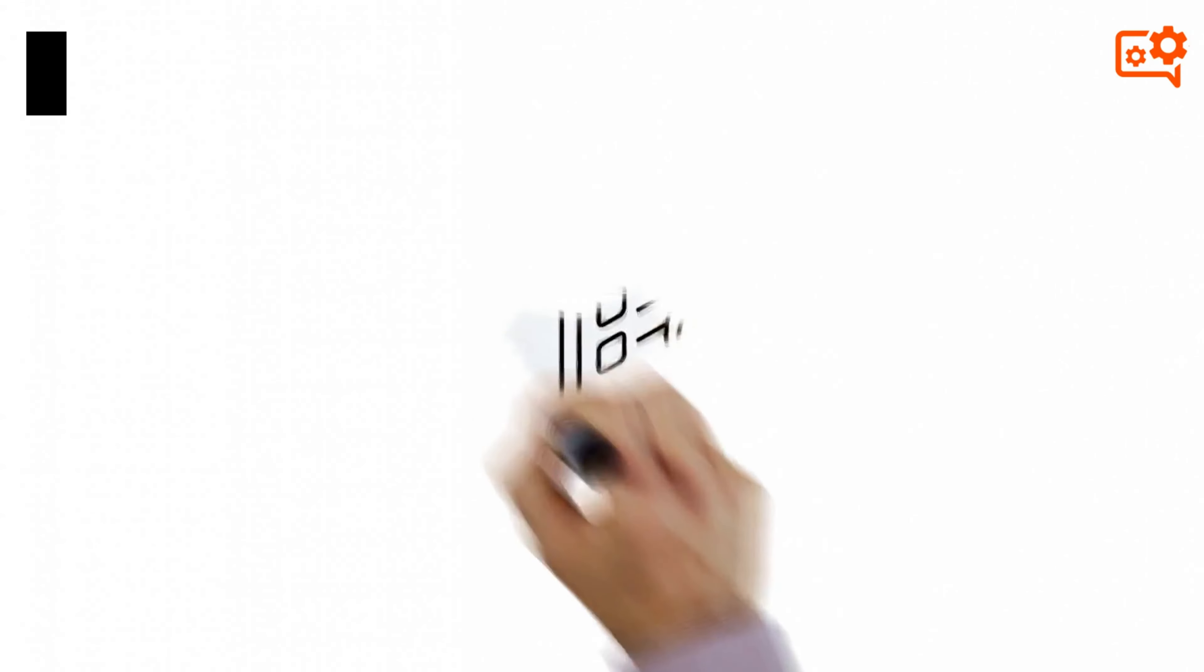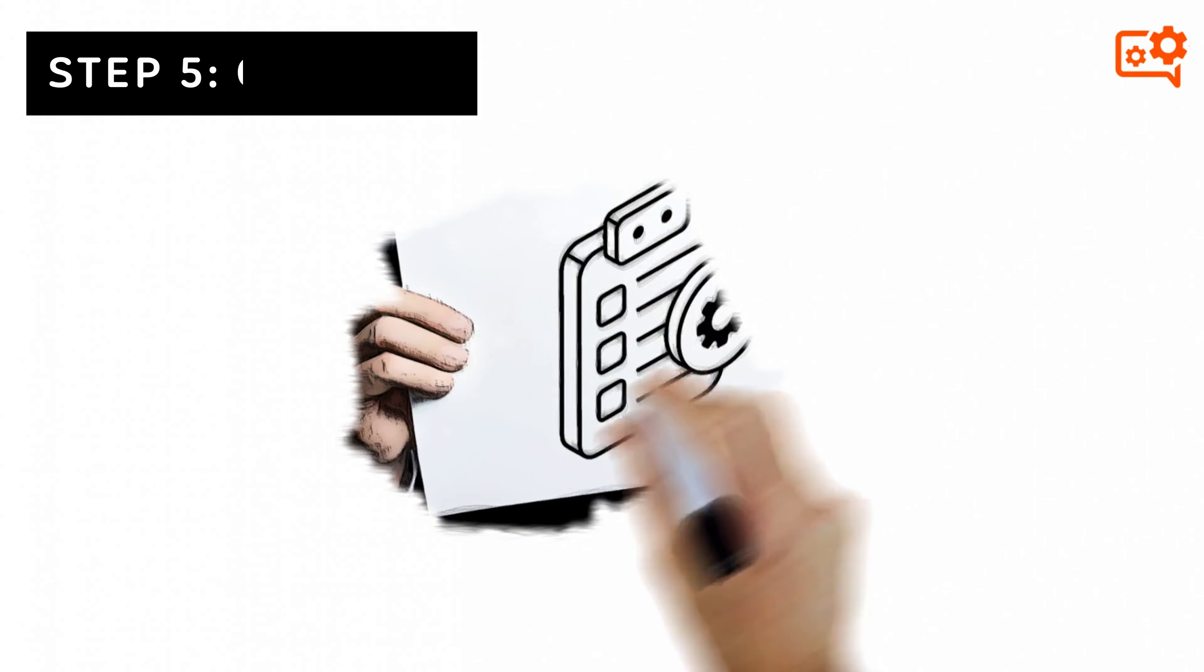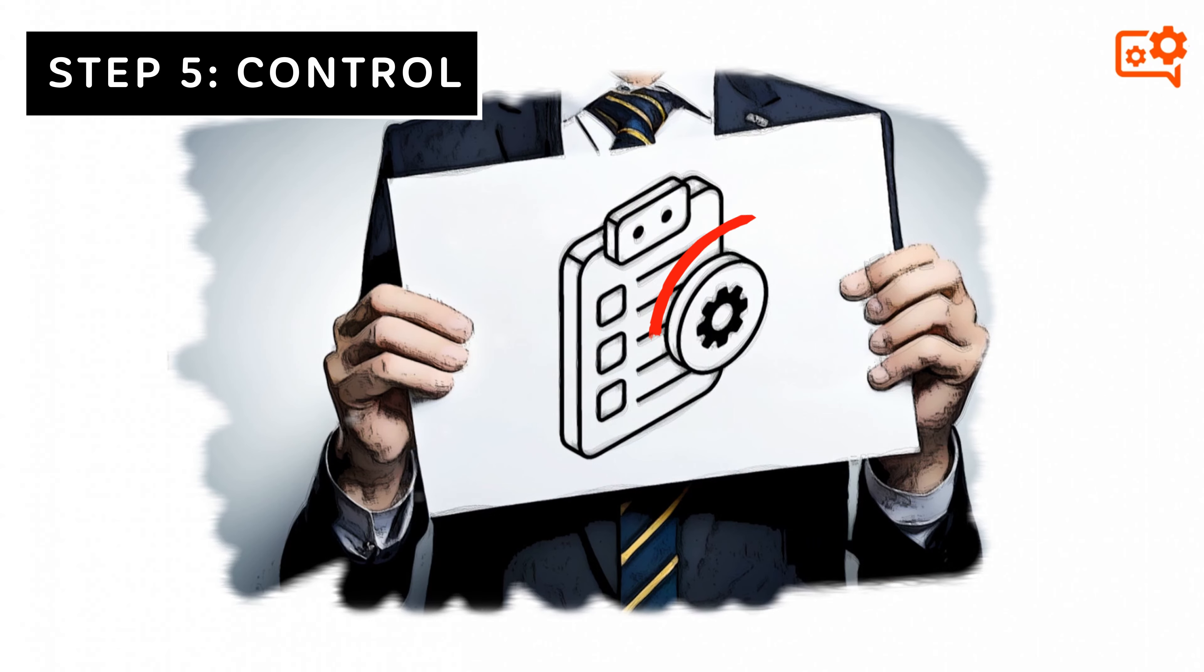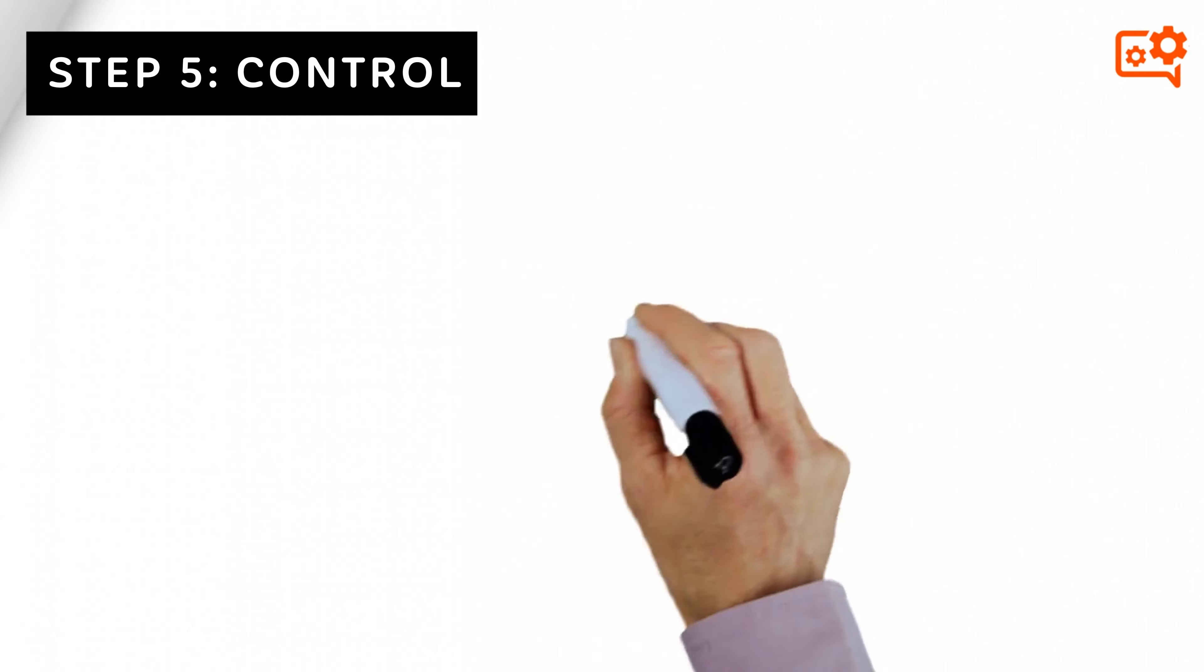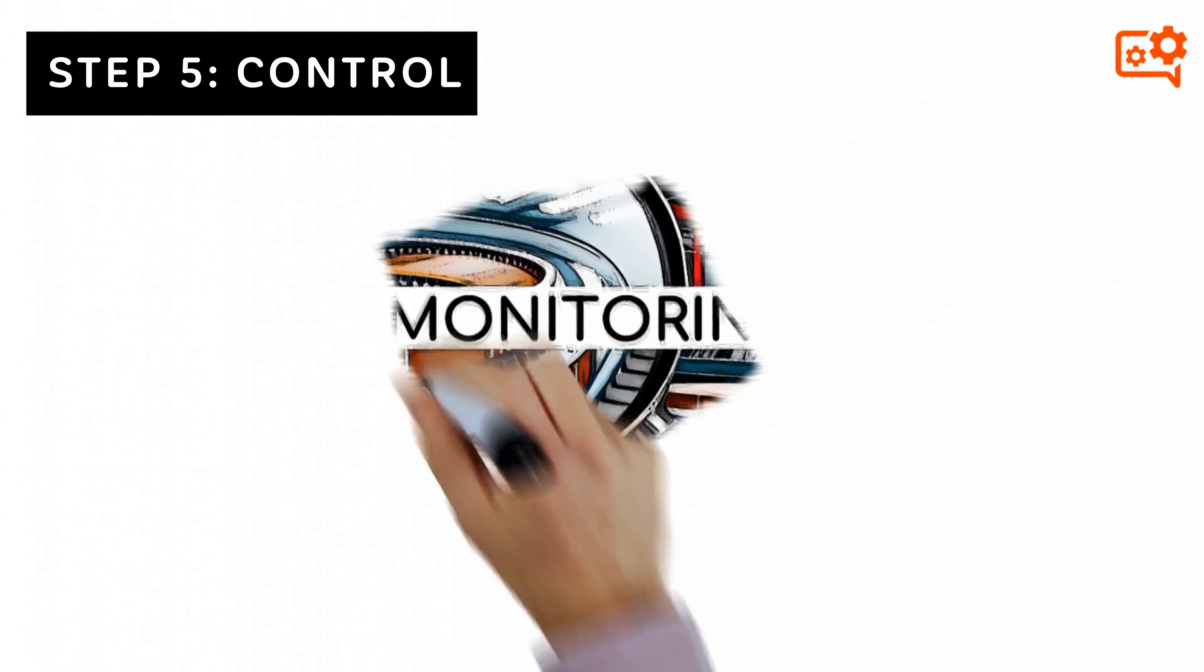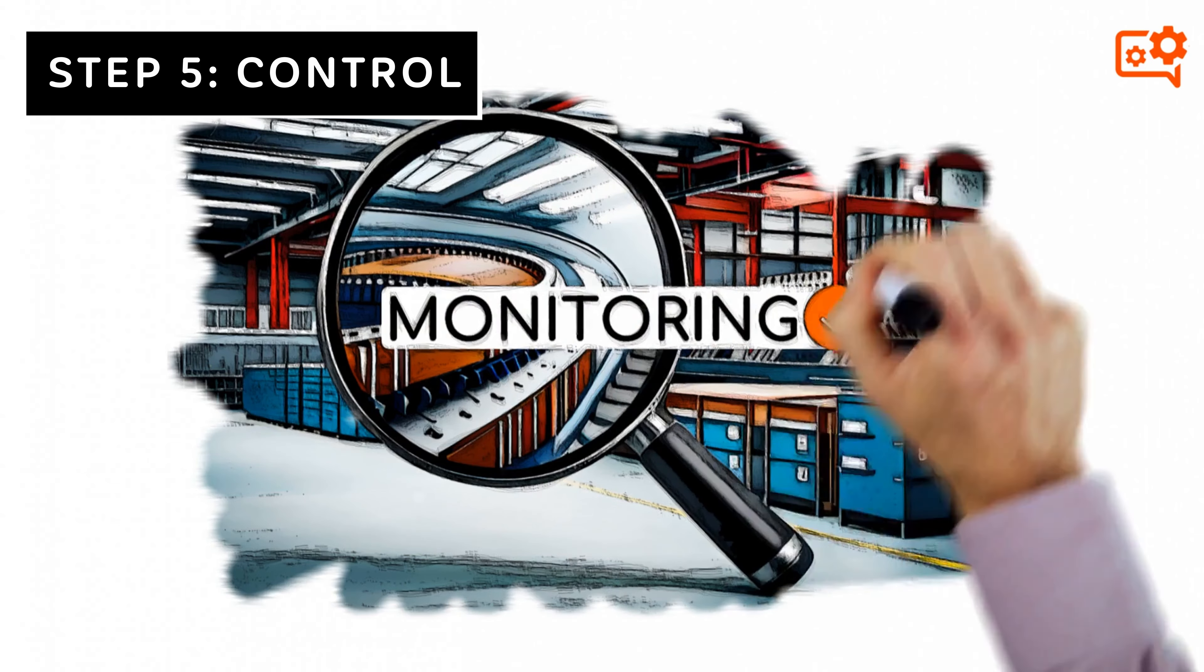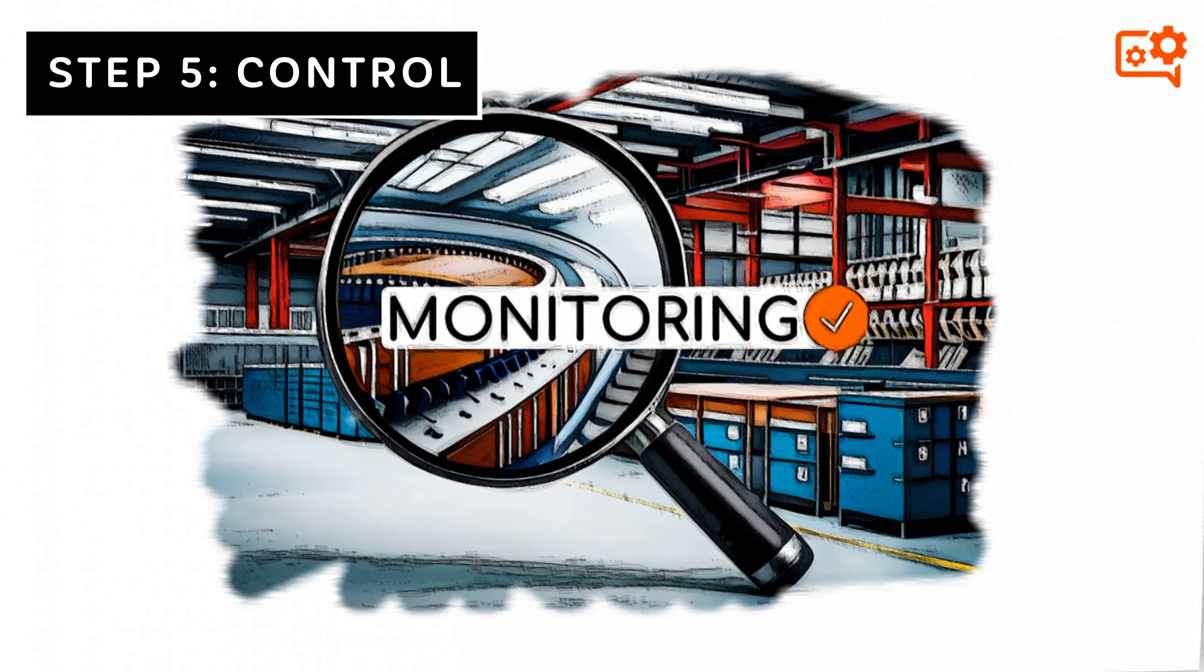And finally, there's Control. This step is all about making sure that your improvements are sustainable and that the problem doesn't recur. It could involve implementing new procedures, training employees, or putting in place monitoring systems to ensure that the problem doesn't come back.